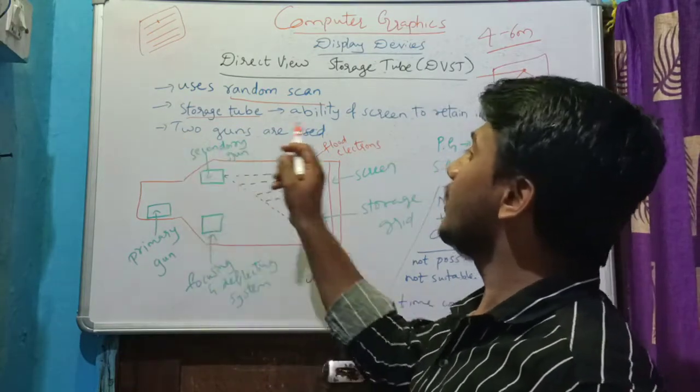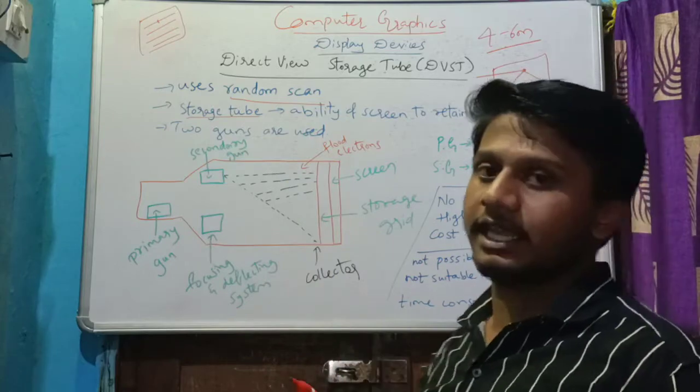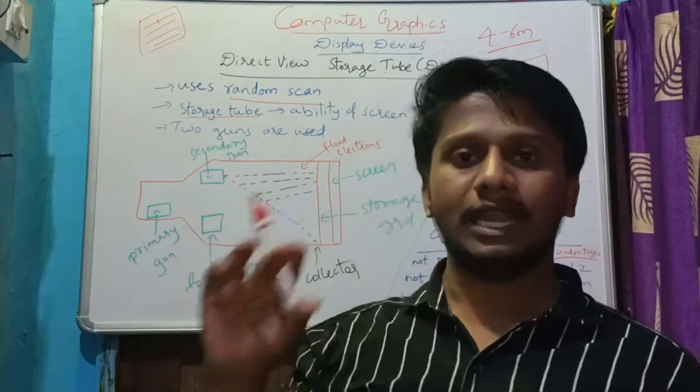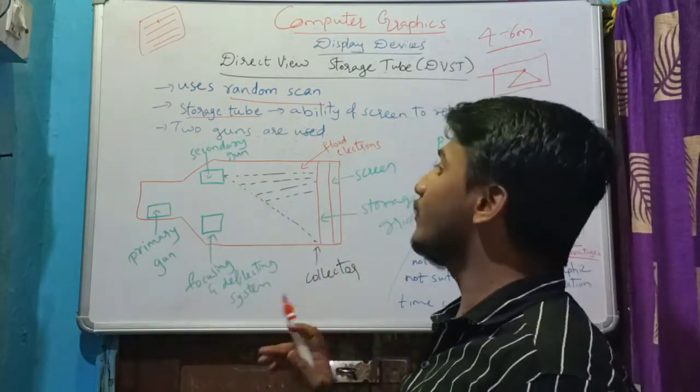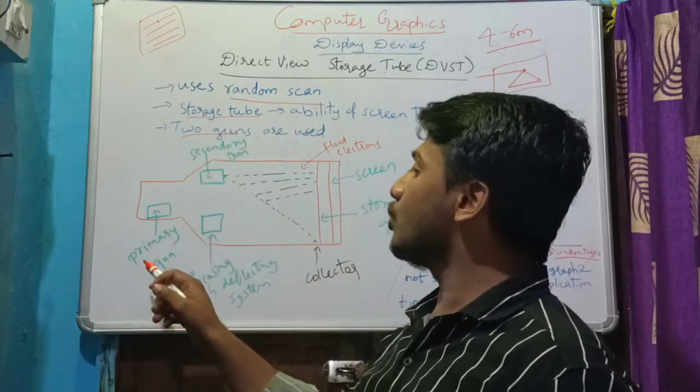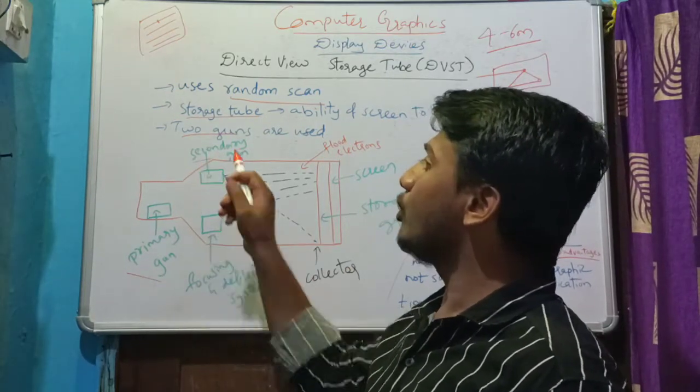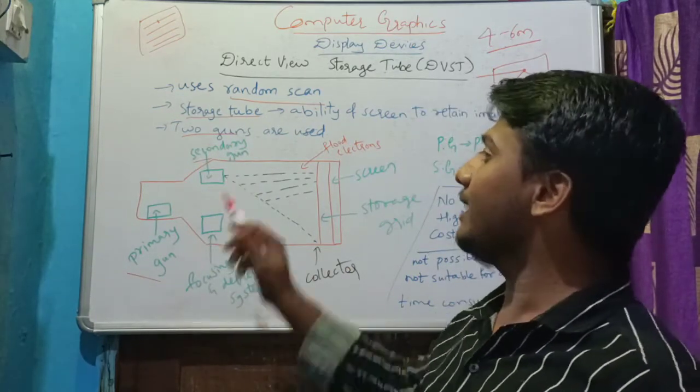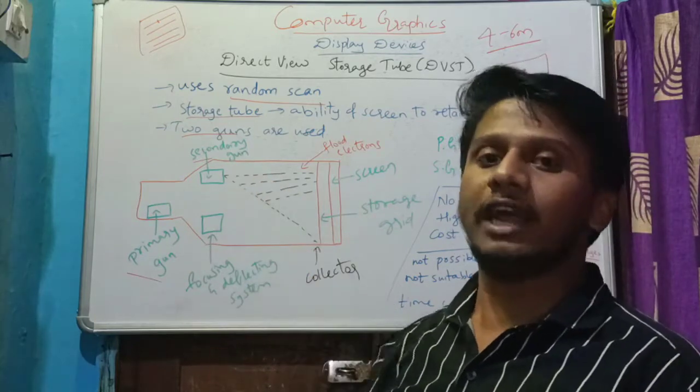Two guns are used in case of DVST. In case of others we have only one electron gun, but here in DVST we use two guns. Those are primary gun and secondary gun. Secondary gun is also called flood gun.